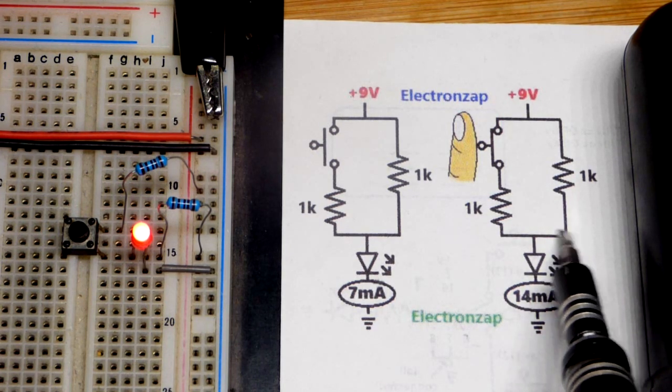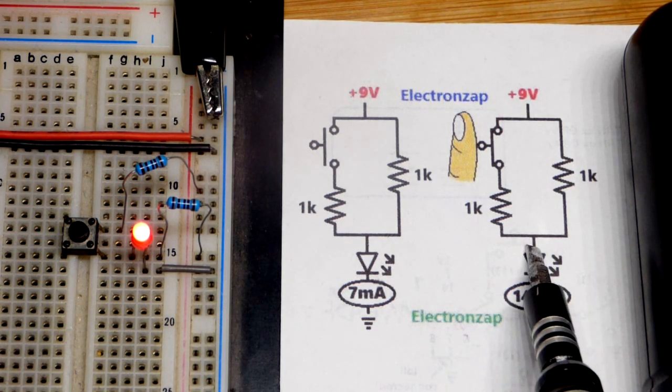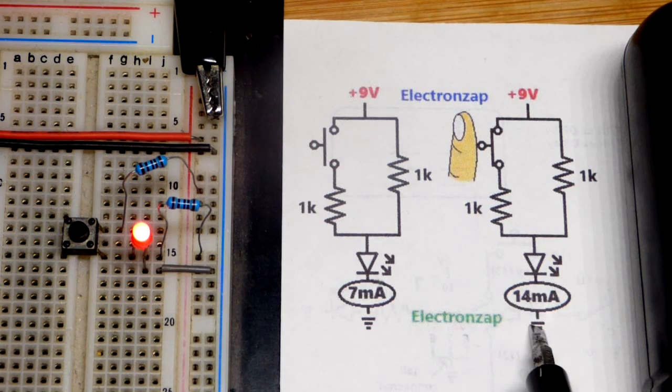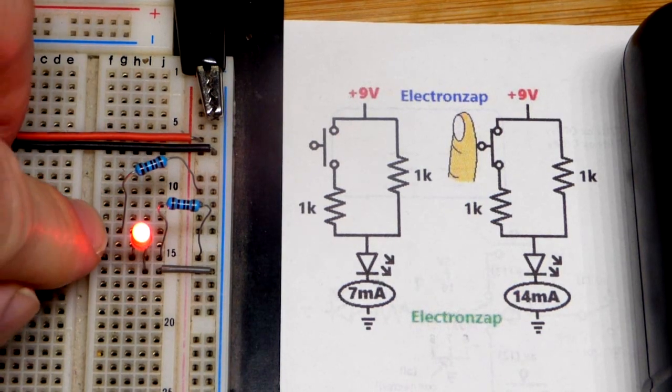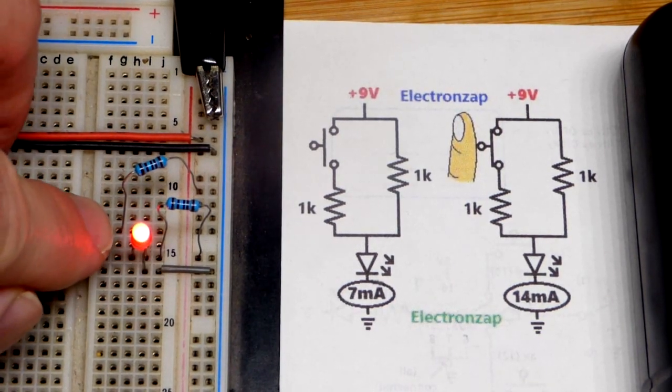Each one is passing about seven milliamps of current. They're combining to go through the LED for a total of about 14 milliamps when you close the switch. That's why it got brighter.